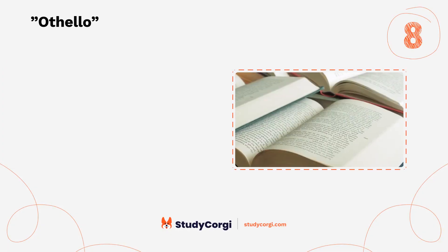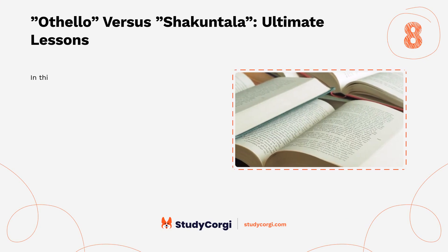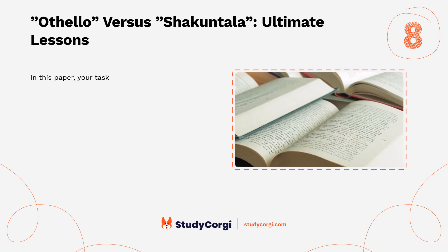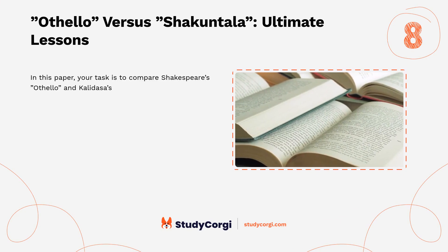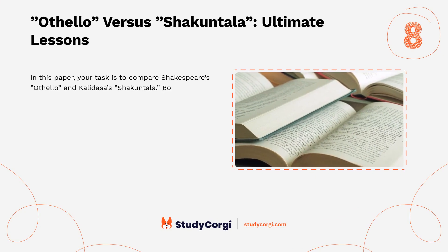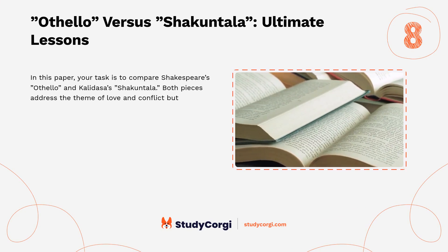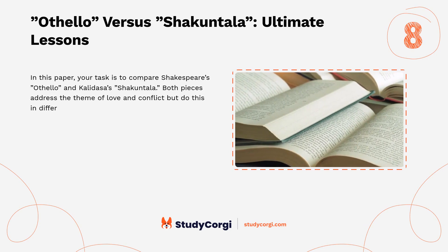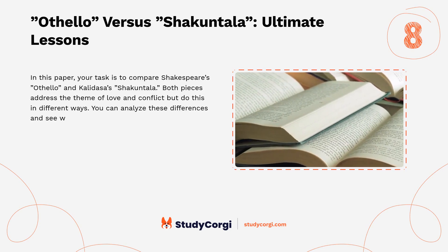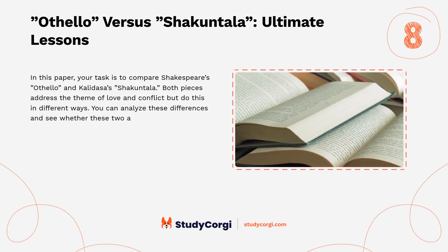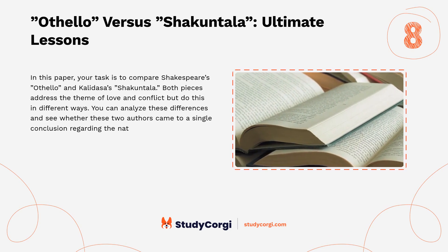Othello versus Shakuntala: ultimate lessons. In this paper your task is to compare Shakespeare's Othello and Kalidasa's Shakuntala. Both pieces address the theme of love and conflict but do this in different ways. You can analyze these differences and see whether these two authors came to a single conclusion regarding the nature of love.